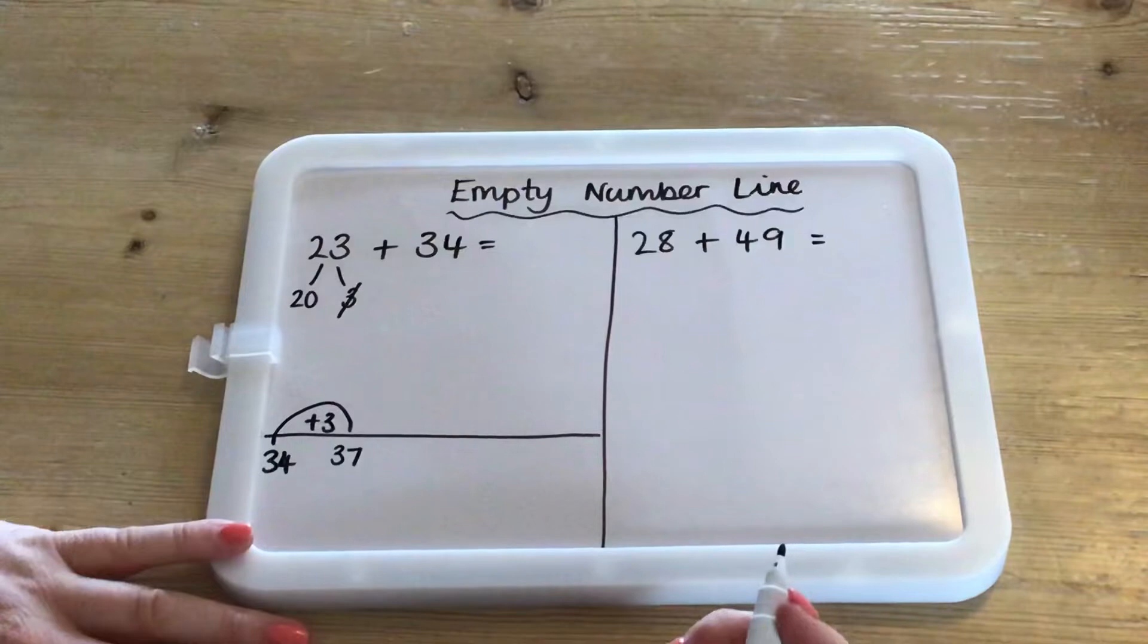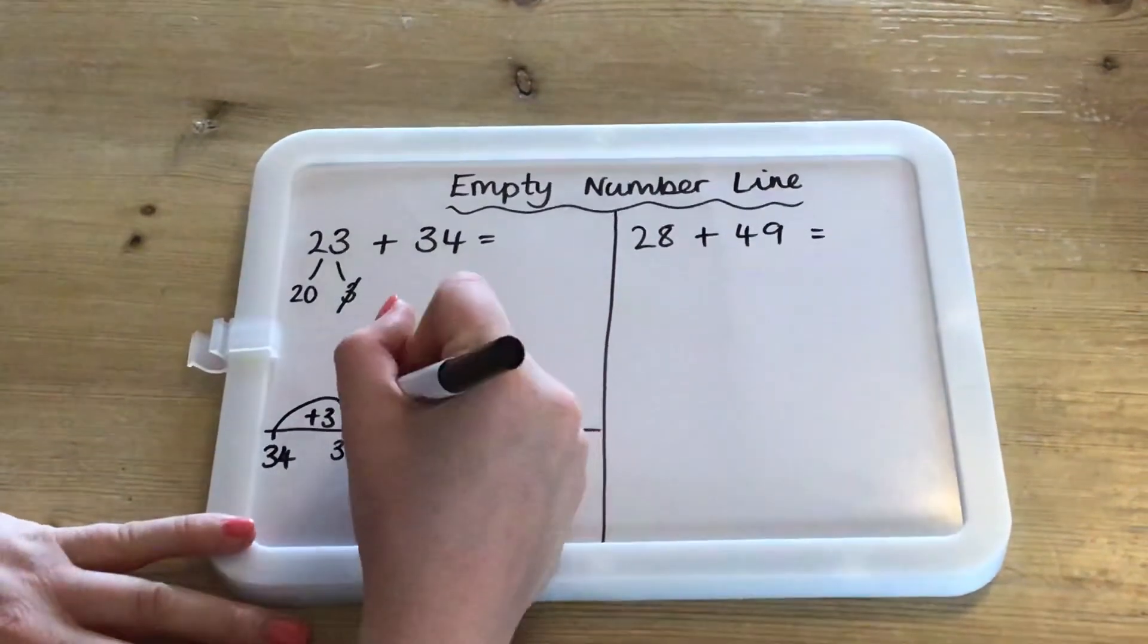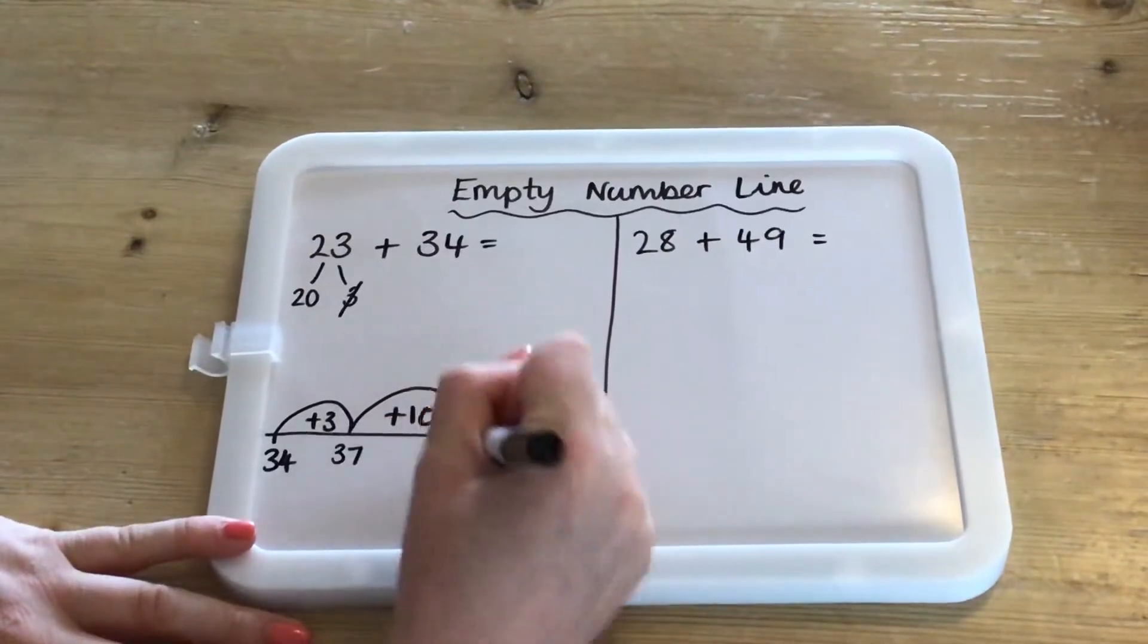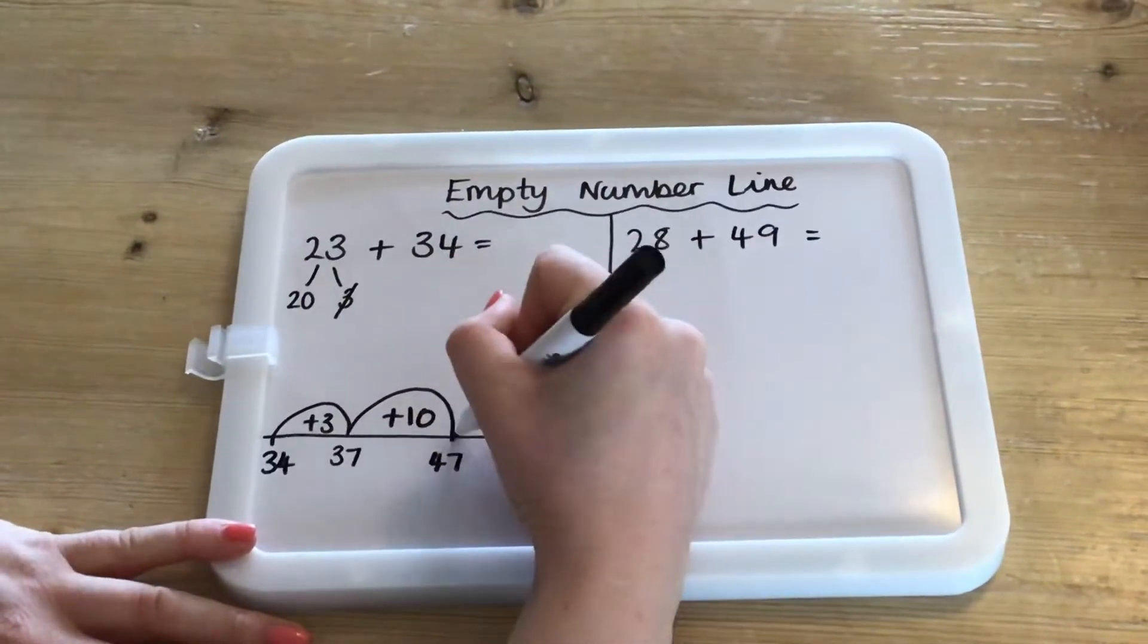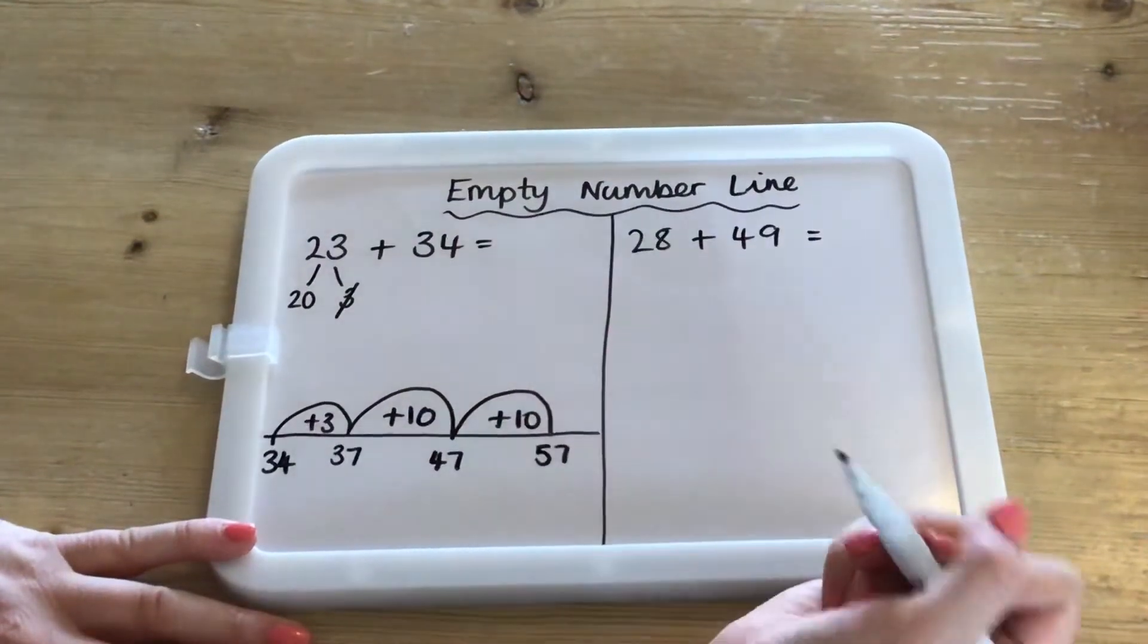Then you add your 20. You can do that in two jumps of 10 or you can do it in one jump of 20. I'm going to do it in two jumps of 10, so that's plus 10, which is 47, plus another 10, which is 57. And that's it.